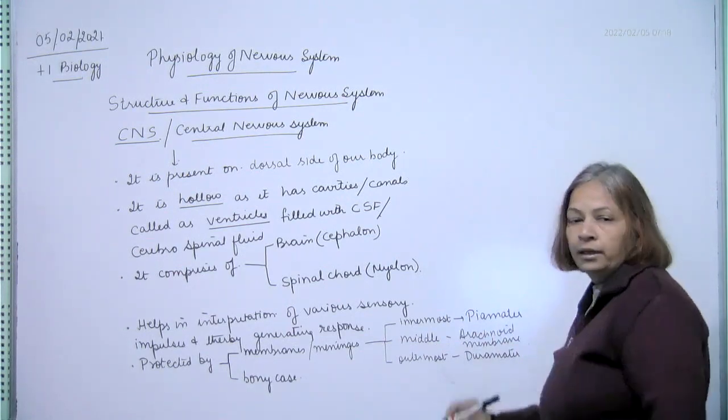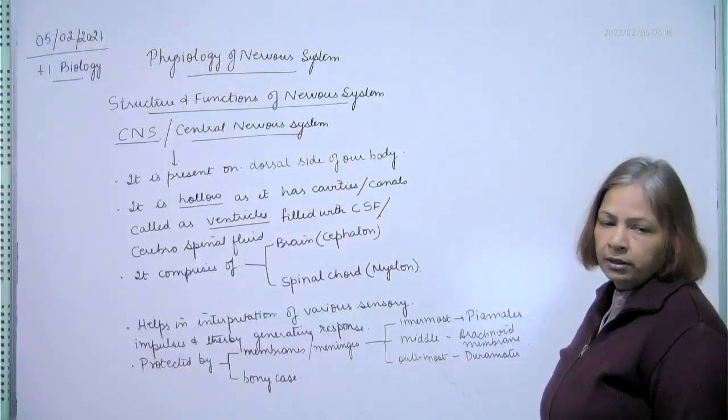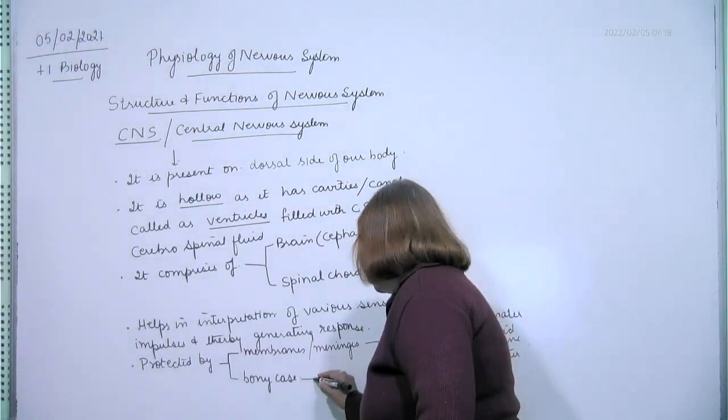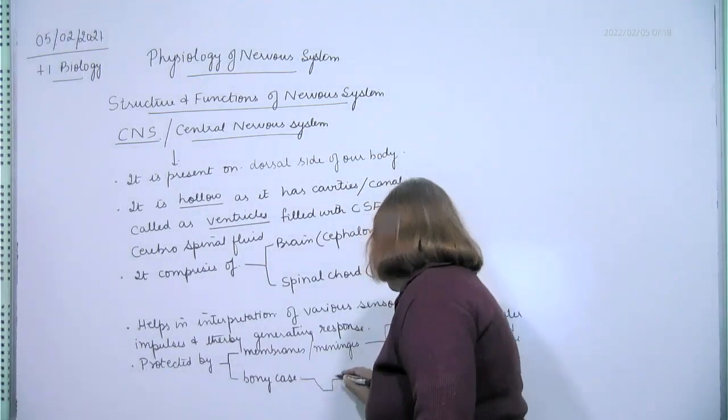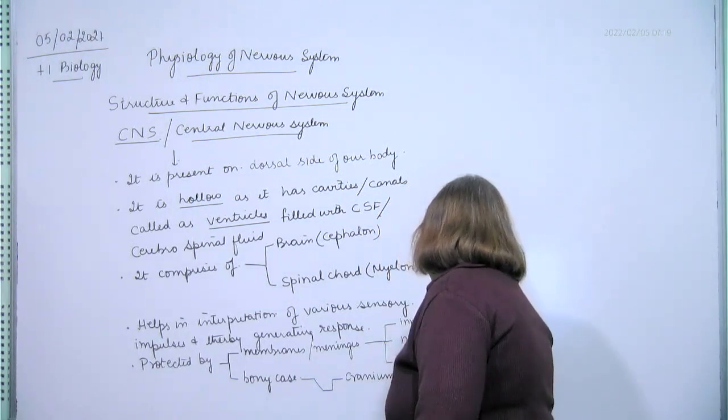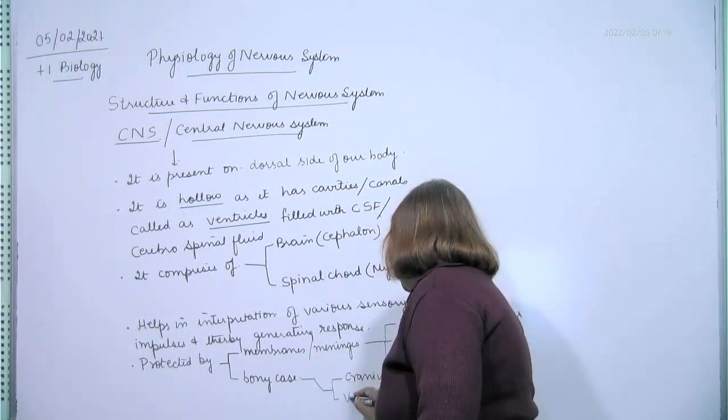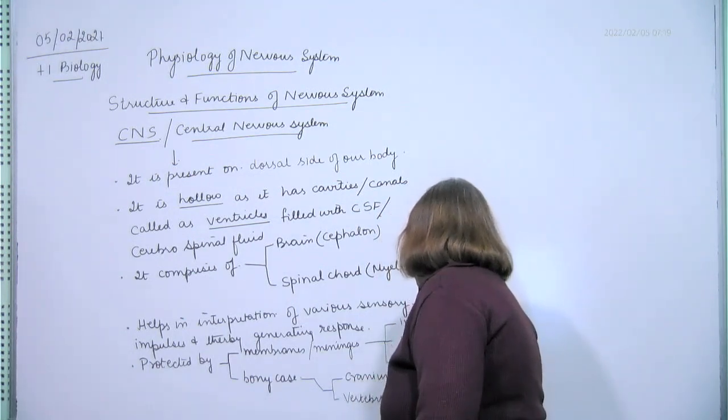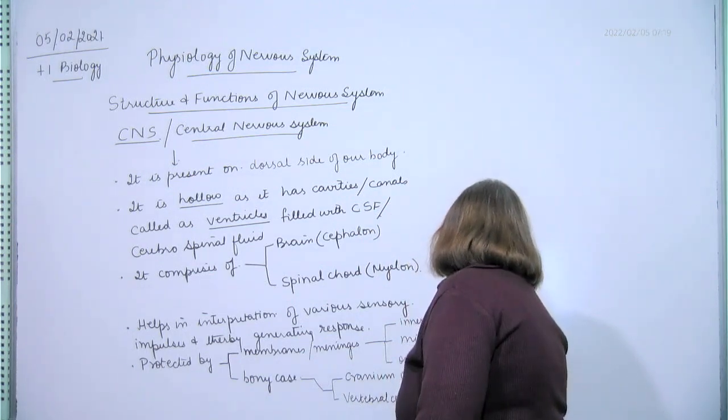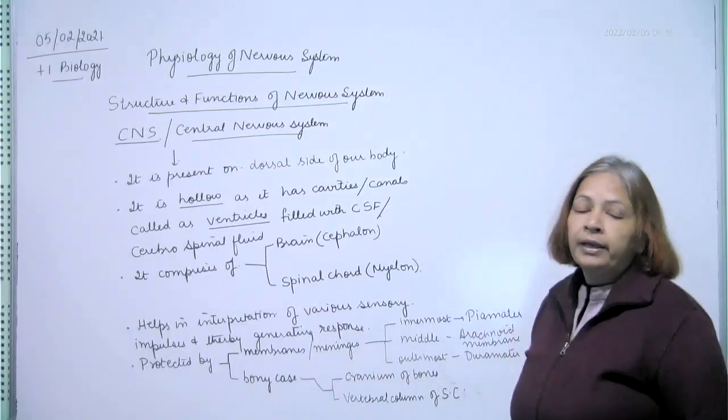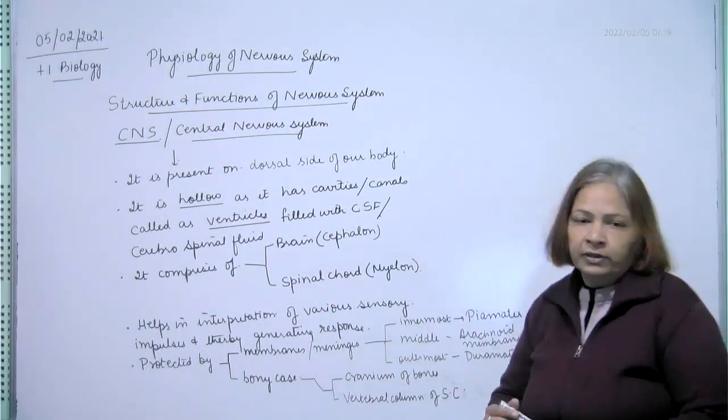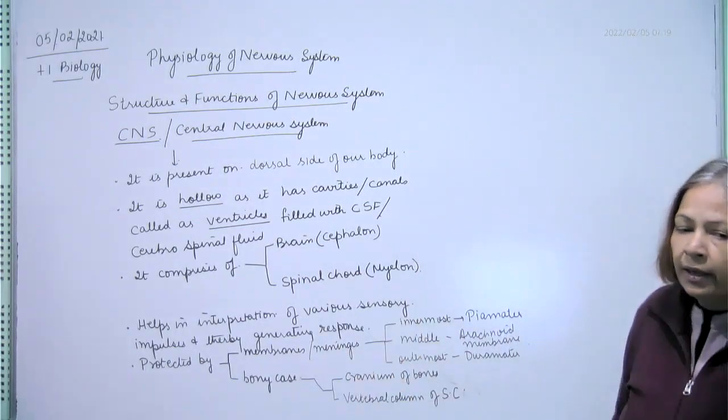These are the three membranes or meninges of brain as well as spinal. Bony case, that is cranium of bones and vertebral column of spinal column. So these are the main points of central nervous system. Then we will do meninges and CSF.